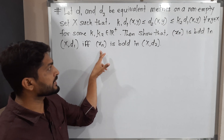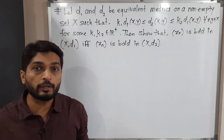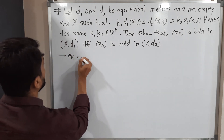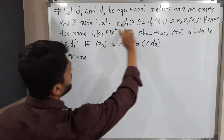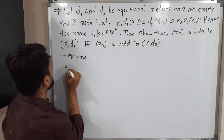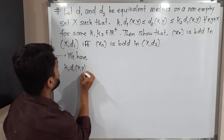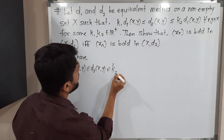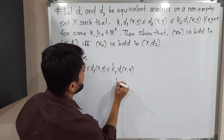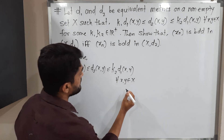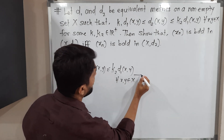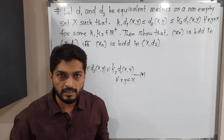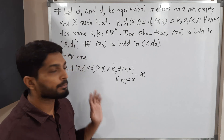First I will write the given information — this is very important. So: k1·d1(x,y) ≤ d2(x,y) ≤ k2·d1(x,y), and this is true for all x, y belonging to X. I am calling this inequality 'star' — it is very important information for us.